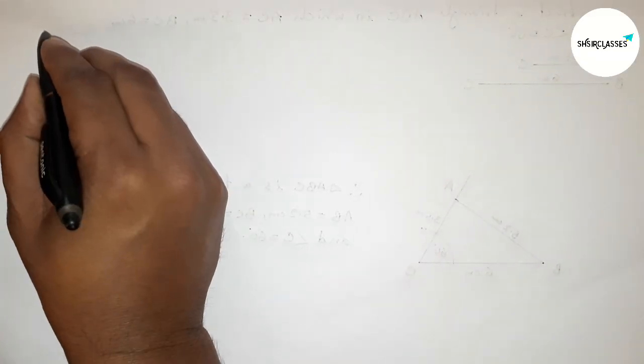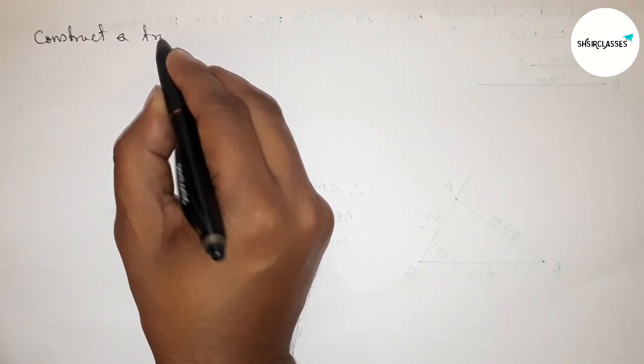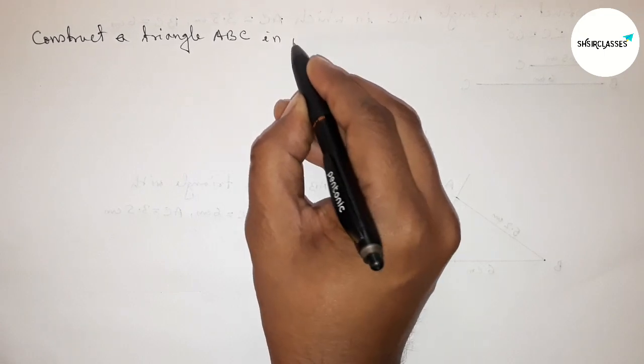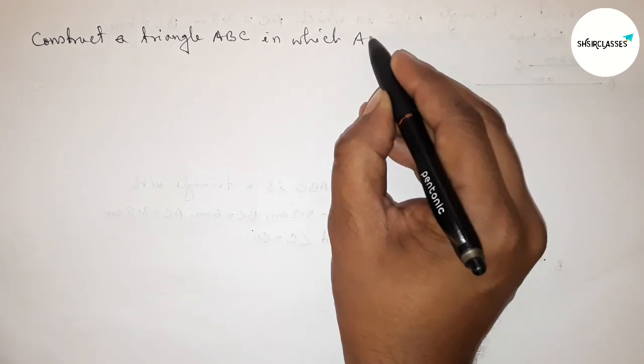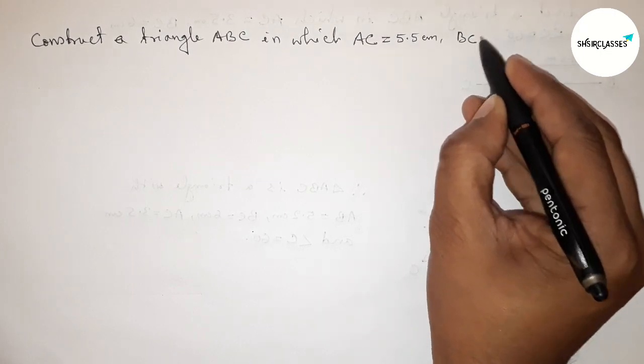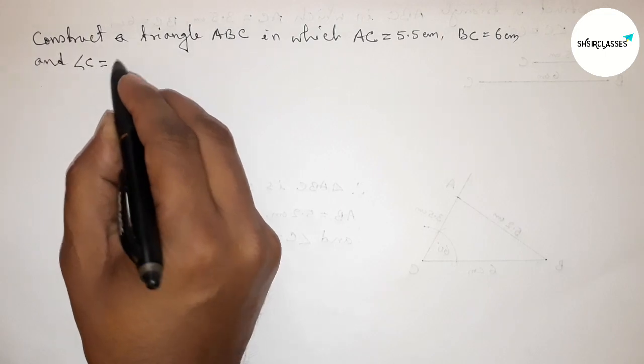Hi everyone, welcome to Essay Share Classes. Today in this video we have to construct a triangle ABC in which AC equals 5.5 centimeter, BC equals 6 centimeter, and angle C equals 60 degrees. So please watch the video till the end.